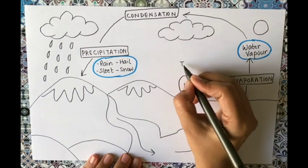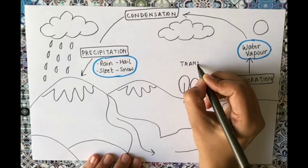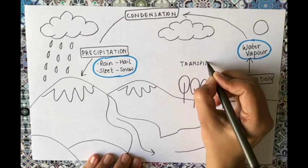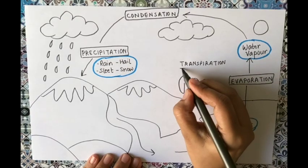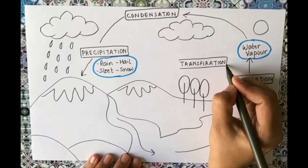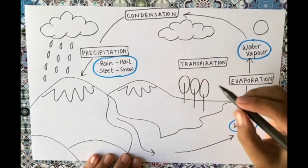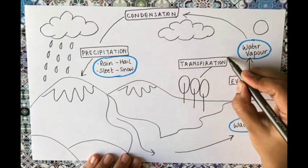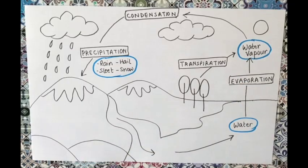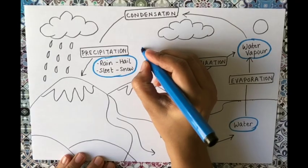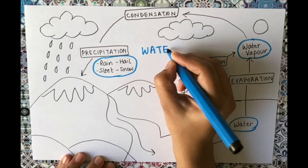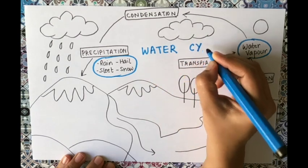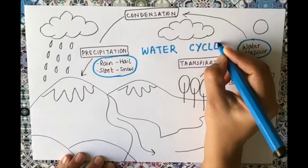Now, about those trees — trees can also release water vapor into the atmosphere through a process called transpiration. By this process, trees keep releasing water vapor into the atmosphere and help add to the bulk of water vapor in the air. That's why people say we should plant more trees, because trees bring rain — and now you know how.